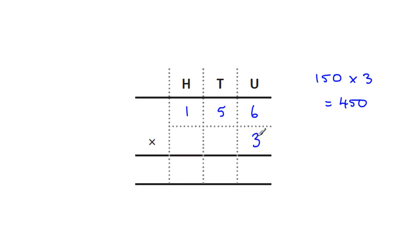But our method goes like this. We just go 3 times 6 is 18. We carry the 1 up to there. 3 times 5 is 15 plus 1 is 16. Carry the 1 up to here. 3 times 1 is 3 plus 1 is 4. 468.